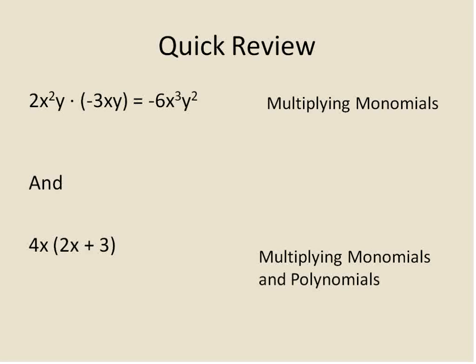The other thing we need to understand before multiplying polynomials times polynomials is multiplying a monomial — a single term — times a polynomial, or multiple terms. What you end up doing is taking that 4x, or anything outside the parentheses, and multiplying it times everything inside. So 4x times 2x gives you 8x squared, and 4x times 3 gives you 12x.